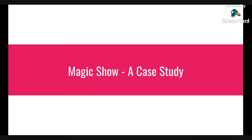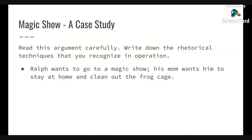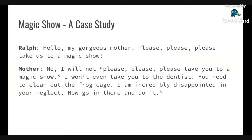Let's look at this case study called 'Magic Show.' Read this argument carefully and, as we go, write down the rhetorical techniques you notice. If you don't remember the name of one, that's totally fine — just make a note that you recognized it, maybe a characteristic of it. Ralph wants to go to a magic show; his mom wants him to stay home and clean out the frog cage.